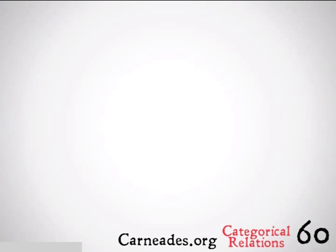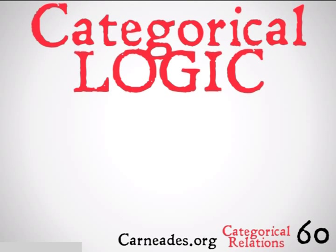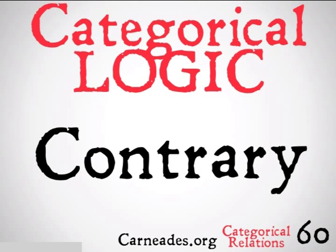Welcome back to 100 Days of Logic with 90-Second Philosophy and Carnedies.org. Today we're going to be continuing with categorical logic, looking at the categorical relation of contrary. All of the relationships we're going to be looking at from this point on are going to be Aristotelian relationships, so that means we assume the existence of the subject if it in fact exists.